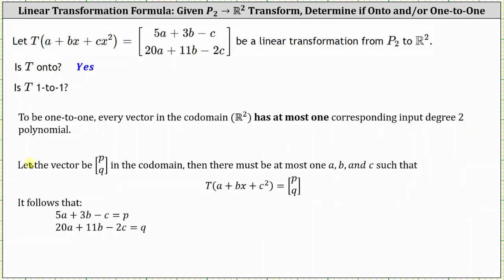Setting this up in a similar way, let the vector PQ be in the codomain, but now for the transformation to be 1 to 1, there must be at most one A, B, and C such that the transformation equals the vector PQ.